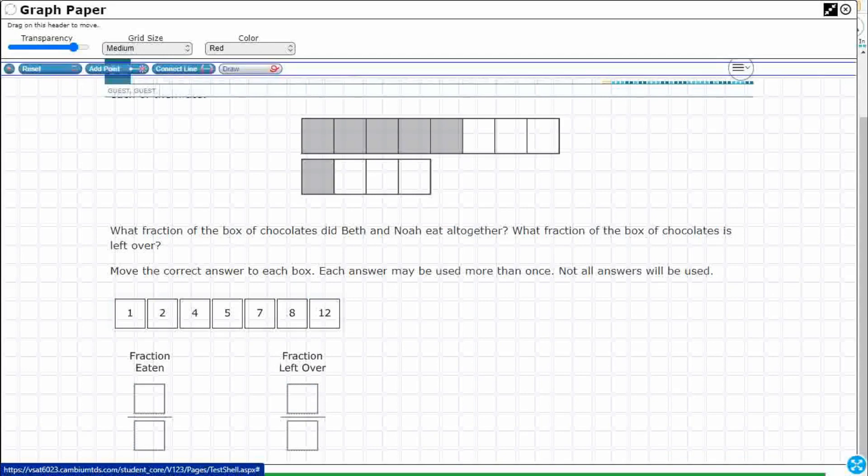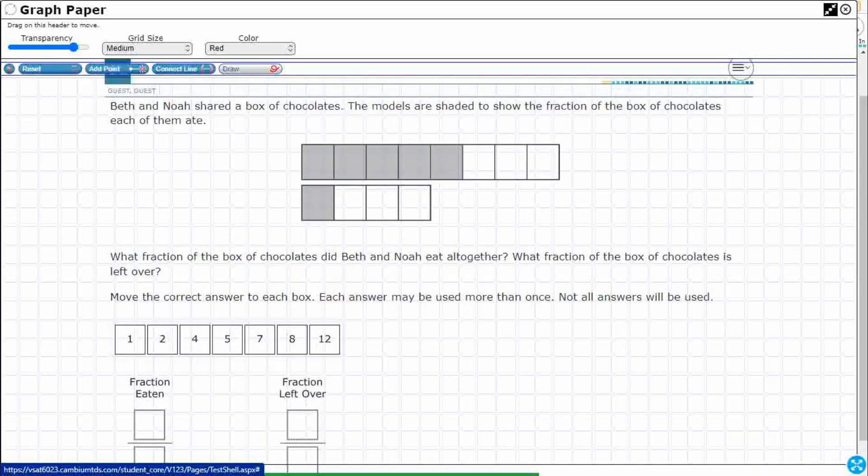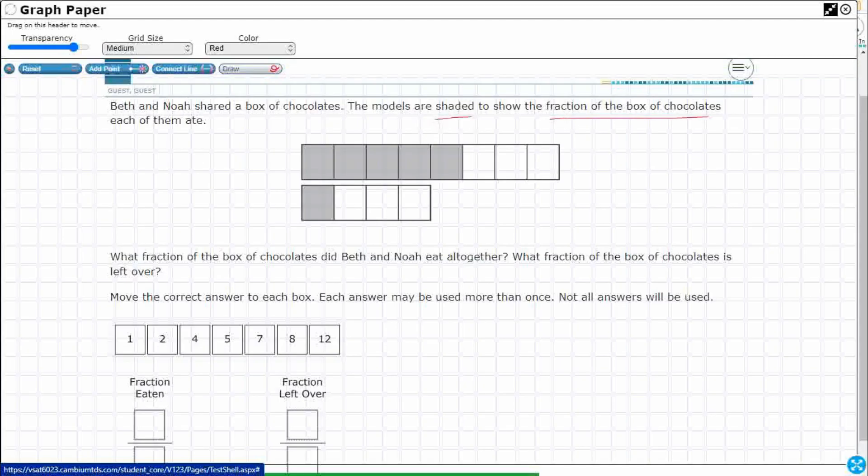So let's look at the fraction eaten. Which one is the eaten? Well, the models are shaded right here to show the fraction of the box of chocolates each of them ate. Okay, so they don't tell us which one is which. I'm just going to say this one's Beth and that one's Noah just for discussion purposes.